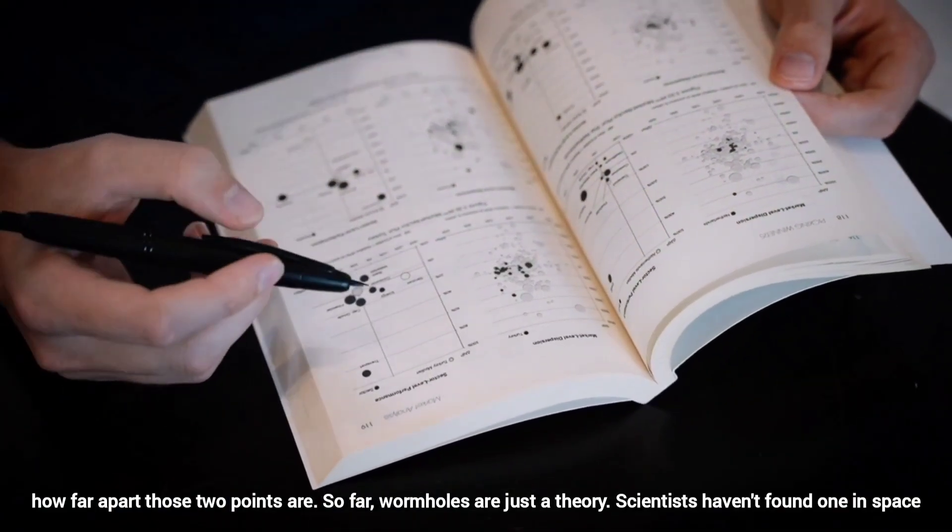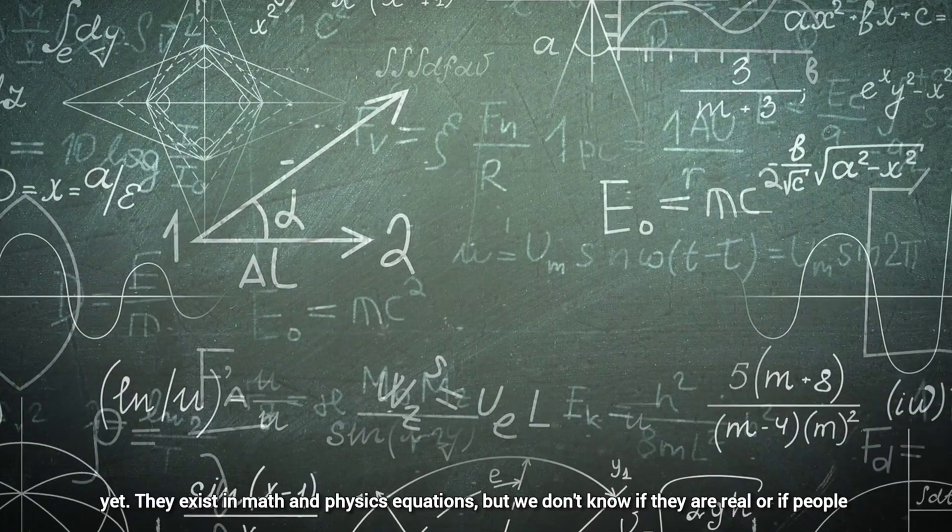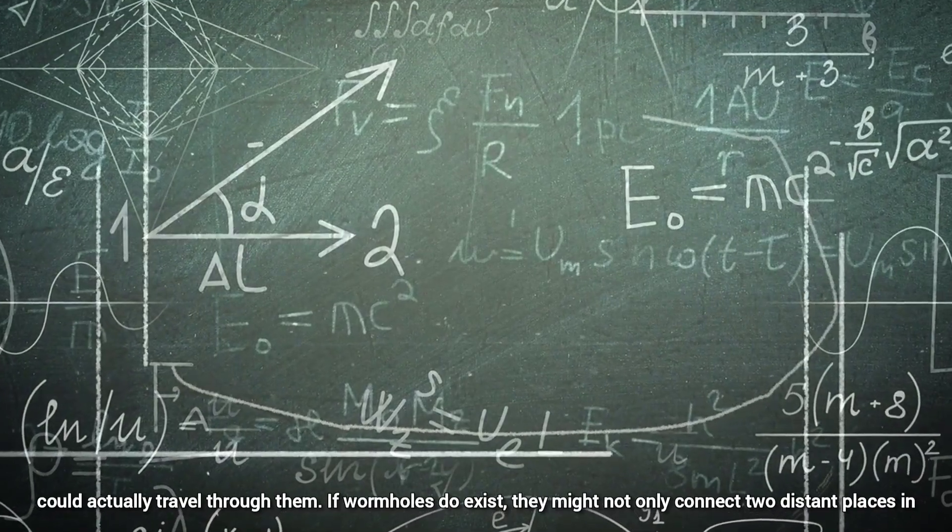So far, wormholes are just a theory. Scientists haven't found one in space yet. They exist in math and physics equations, but we don't know if they are real or if people could actually travel through them.